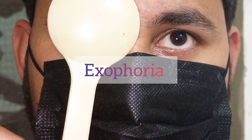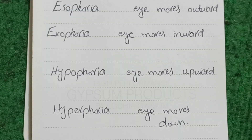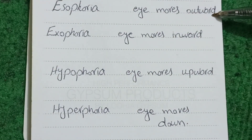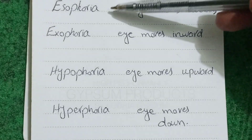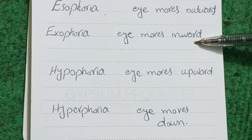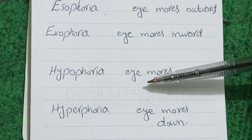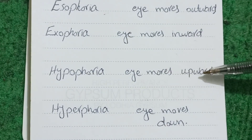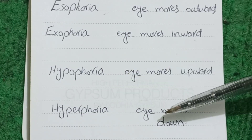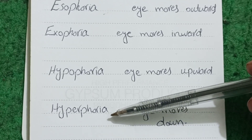The eye is moving inward from outward, which means this patient has bilateral exophoria. In the alternate cover test, if the eye is moving outward, the deviation is called esophoria. If the eye is moving inward from outward, the deviation is called exophoria. If the eye is moving upward, the deviation is called hyperphoria, and if the eye is moving downward, the deviation is called hypophoria.